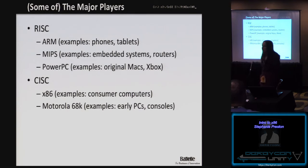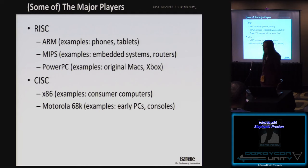Examples of each: in the RISC category, ARM is the most popular — it's what runs on most phones, Android, iPhones, tablets. MIPS runs on a lot of embedded systems like network equipment and routers. PowerPC was on the original Macs and the Xbox and Xbox 360. On the CISC side, x86 is what we're focusing on — it's a very complex instruction set used in all consumer computers, all Macs, PCs, and the Xbox One. The Motorola 68K was used in really early PCs.